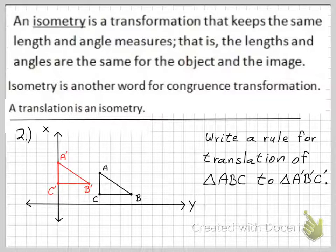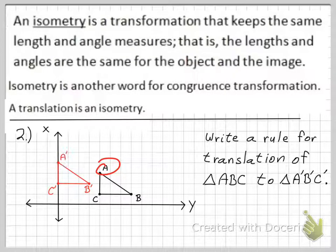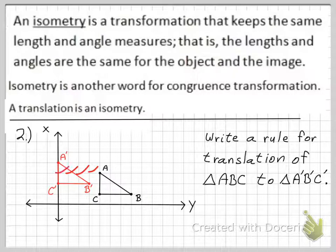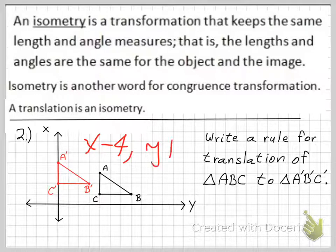There are a couple of ways to do that. You could choose any point and its corresponding prime value, so A to A' for example. To go from A to A', you go 1, 2, 3, 4 to the left, and then 1 up. So it's 4 to the left and 1 up.